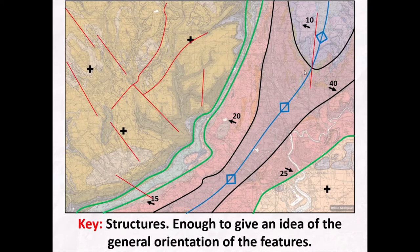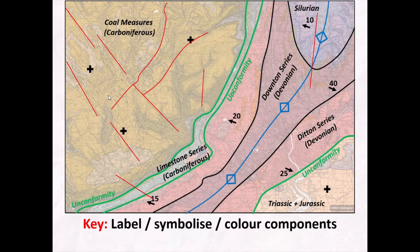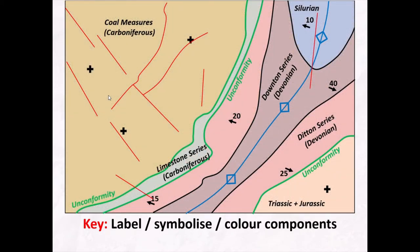Then I've included the key structures: the axial trace of the antiform fold in the Devonian rocks, and the key generations of faults along with some cross-cutting relationships. After adding labels and colour, I've been able to simplify down the Newport map to its key components. I think you'll agree that this is slightly easier to understand than a geological map in its full glory.